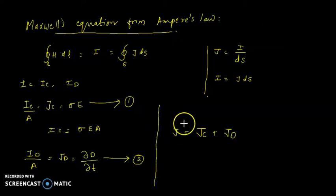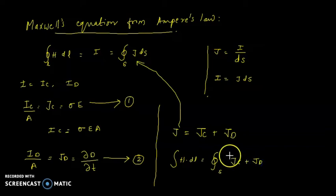Substitute J here. So I becomes, this expression becomes JC plus JD ds.